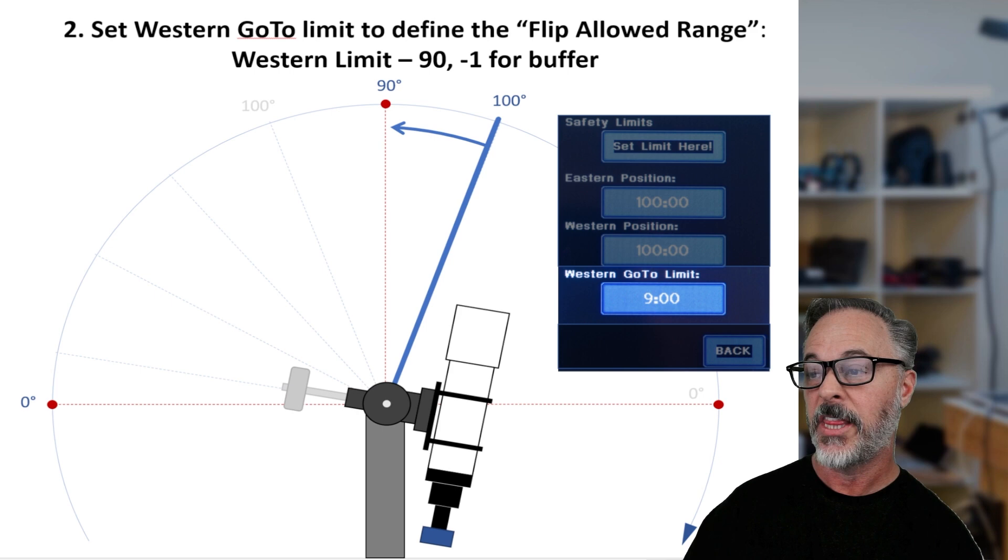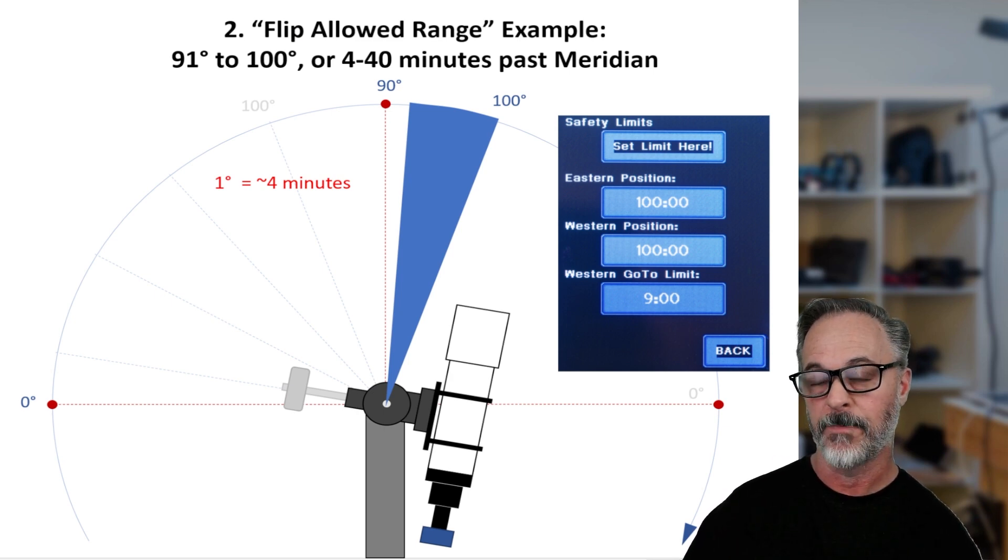And what this creates is a flip allowable range in this example of 91 degrees and angular degrees to 100 degrees.